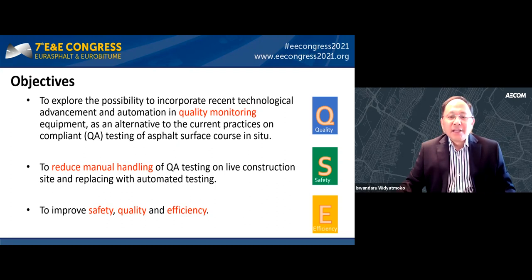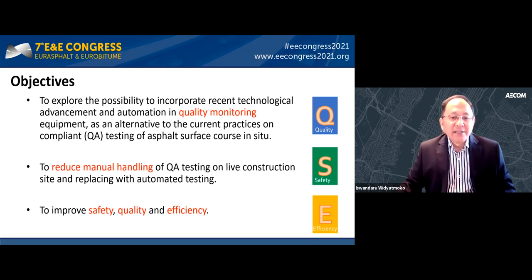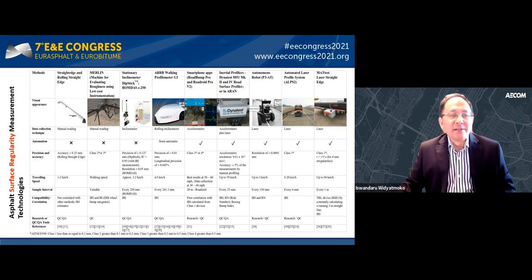This project explores the possibility of incorporating recent technology and automation in quality monitoring equipment as an alternative to conventional testing of asphalt pavements. The driver was that conventional test methods inherently carry safety risks for site operators. The use of automated technologies currently available to the construction industry could remove or mitigate that exposure. Hence, the objectives from this research were to improve safety, quality, and efficiency.